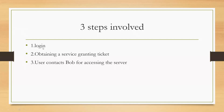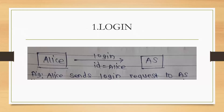There are three steps in Kerberos: the first is the login phase, the second is obtaining a service granting ticket, and the third is when the user contacts Bob to access server services — for example, network printing or using applications available at the server machine. We will discuss each step one by one.